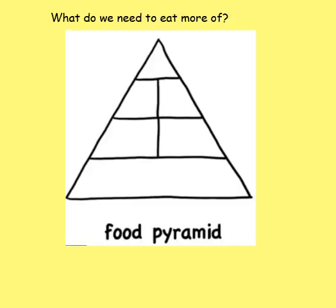What I'd like you to do now — just very quickly on a scrap piece of paper — is to complete this food pyramid. At the very bottom, the biggest part of the pyramid, you need to fit the type of food we need most of. As you move up to the very top, the food at the top is the type we want to eat the least of. Our body still needs it, but we need less of it. Pause the video and see if you can complete the food pyramid.